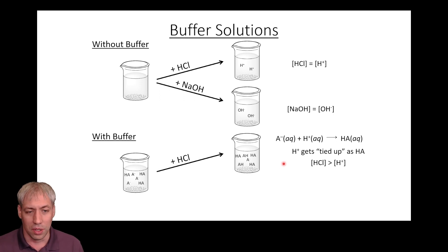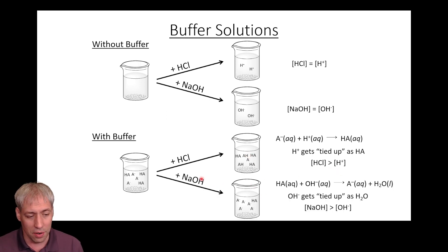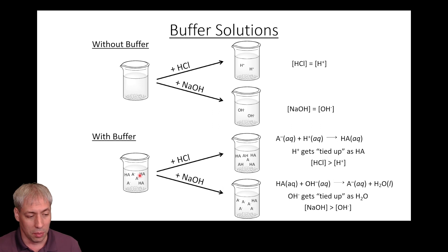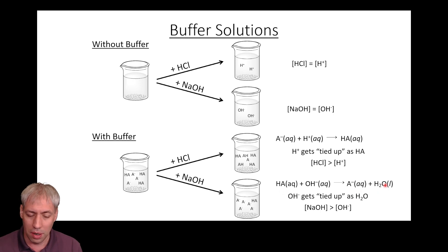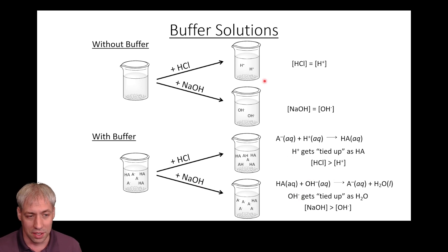Rather than delivering H⁺ directly like in pure solution, HCl turns that H⁺ into HA — a much weaker acid. Similarly, if you add OH⁻, it gets tied up by an HA: HA + OH⁻ gives you A⁻ and H₂O. Rather than OH⁻ floating around, you have A⁻, which is a weaker base. Effectively, you're tying up strong acid protons and basic OHs by just changing the ratio of HA to A⁻.